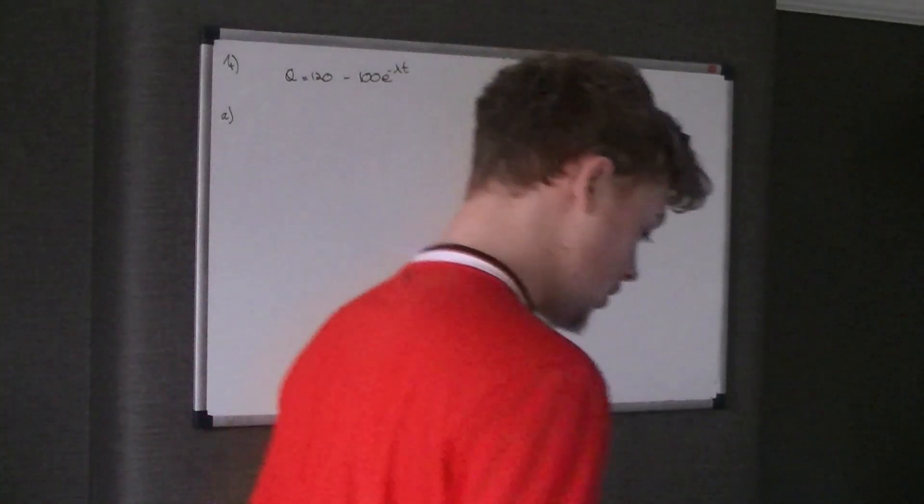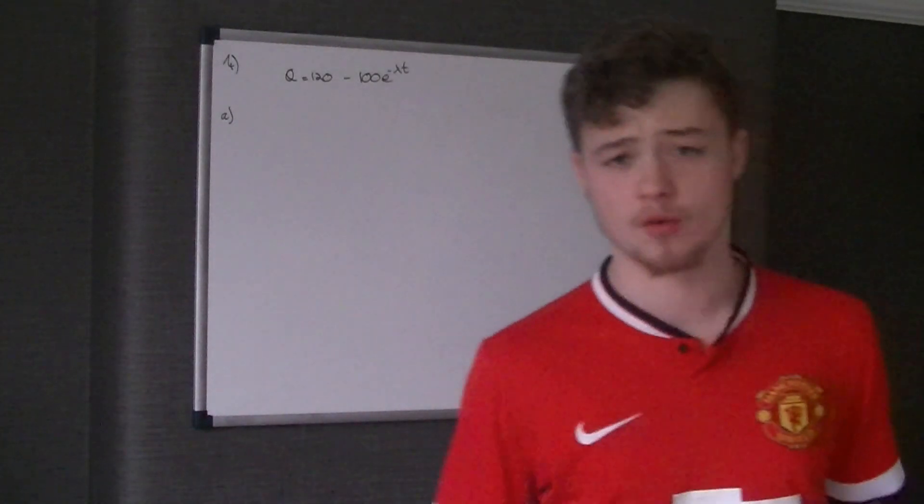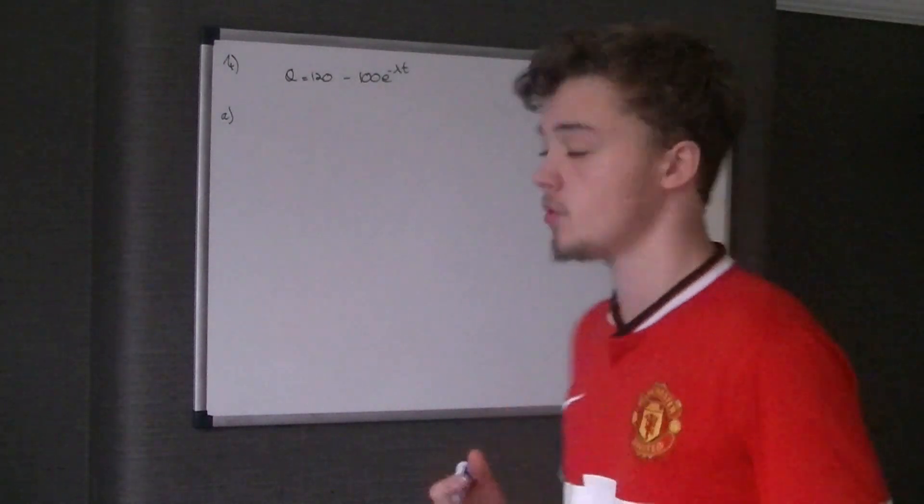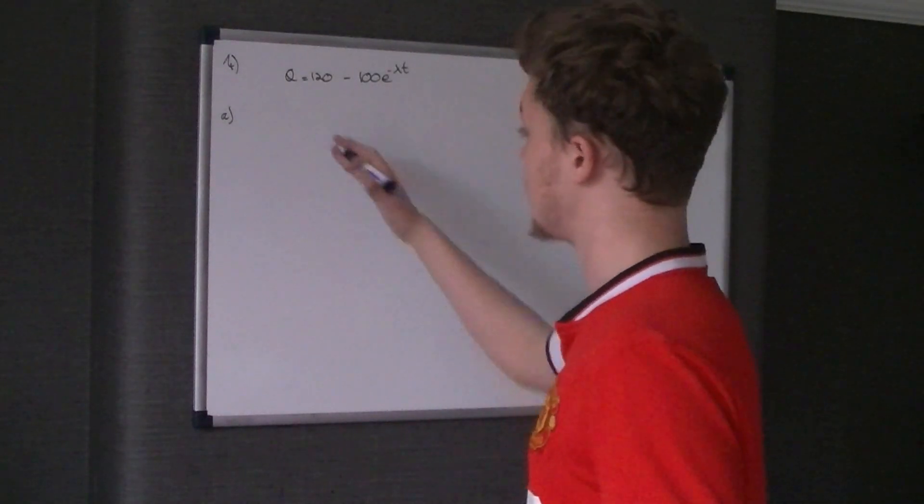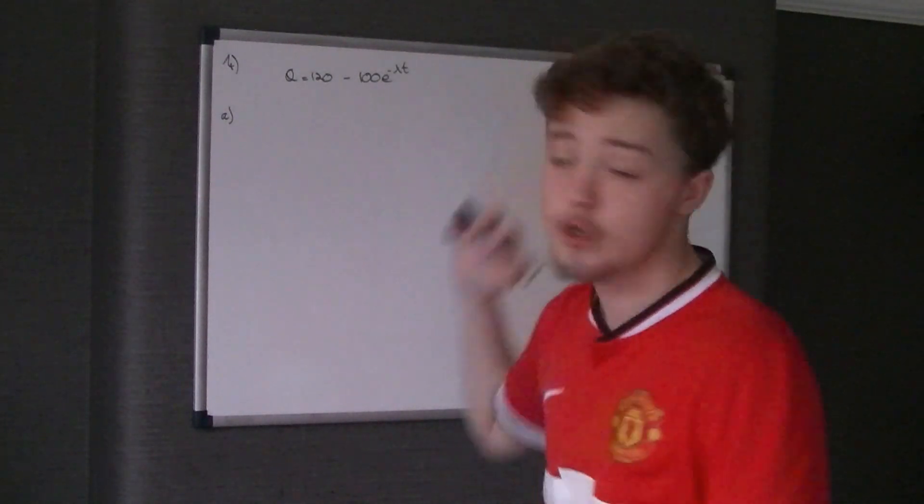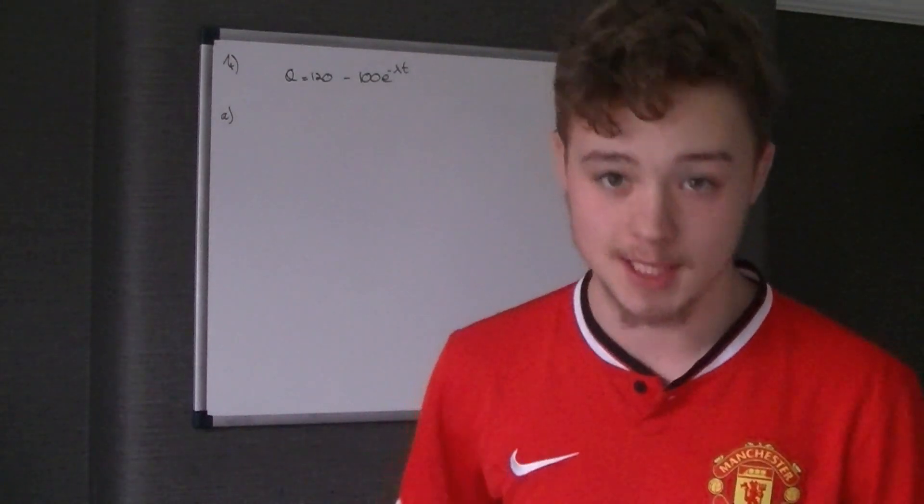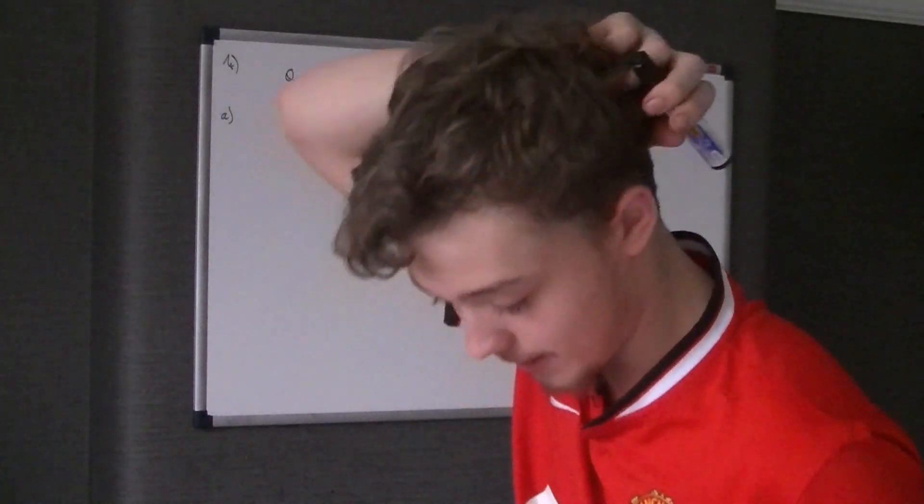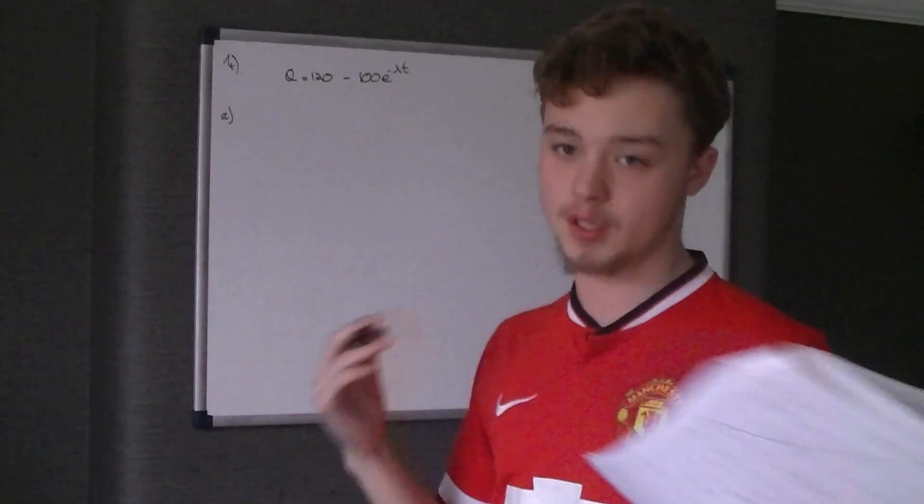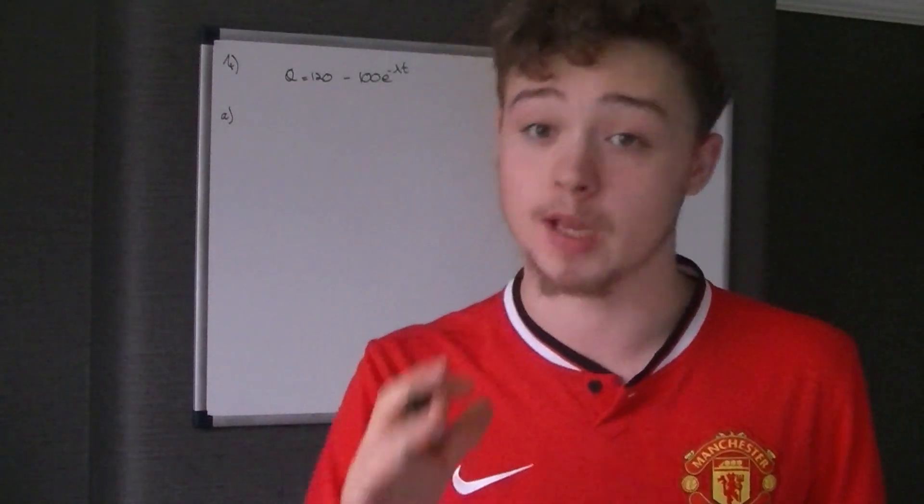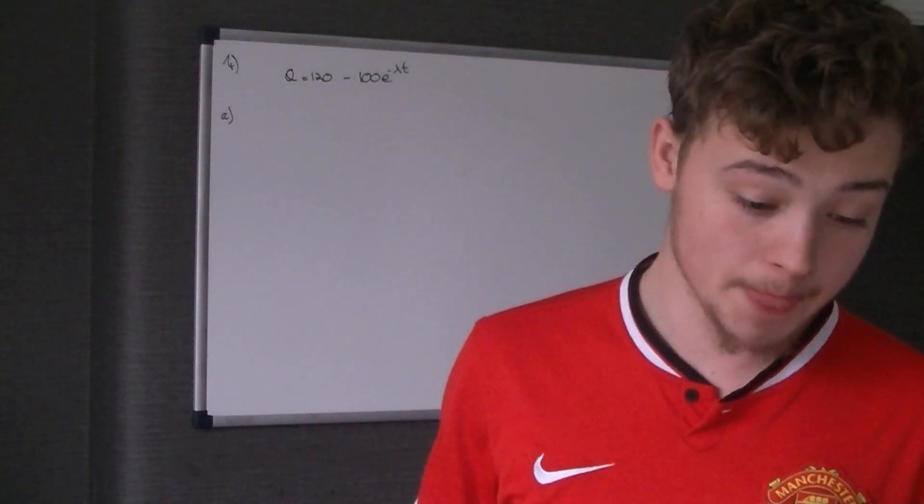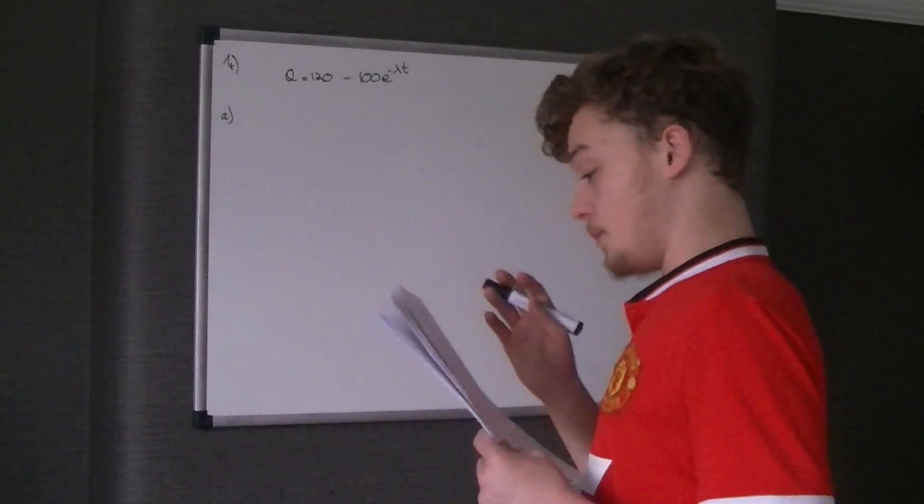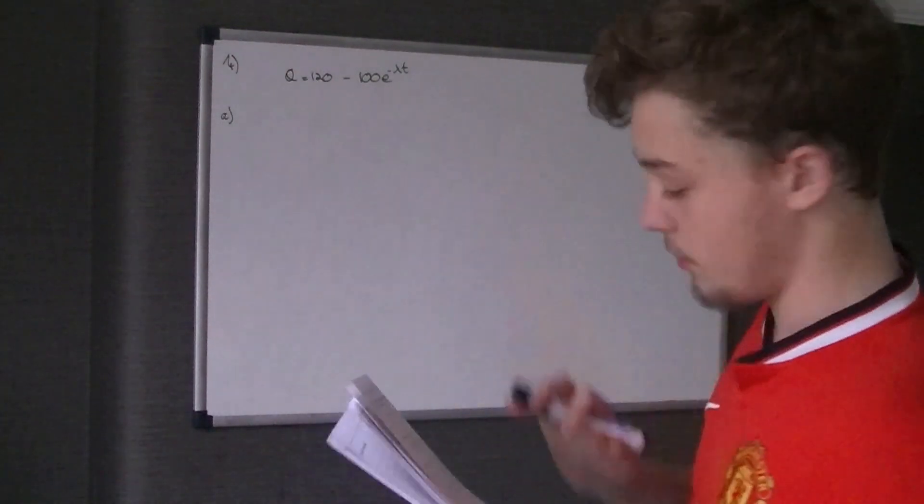Right, this is now question 4 for Edexcel's C3 June 2015 paper. The first question we're given is this formula: theta is equal to 120 minus 100e to the power of negative lambda t. The background to this is we're told that water has been heated in an electric kettle.